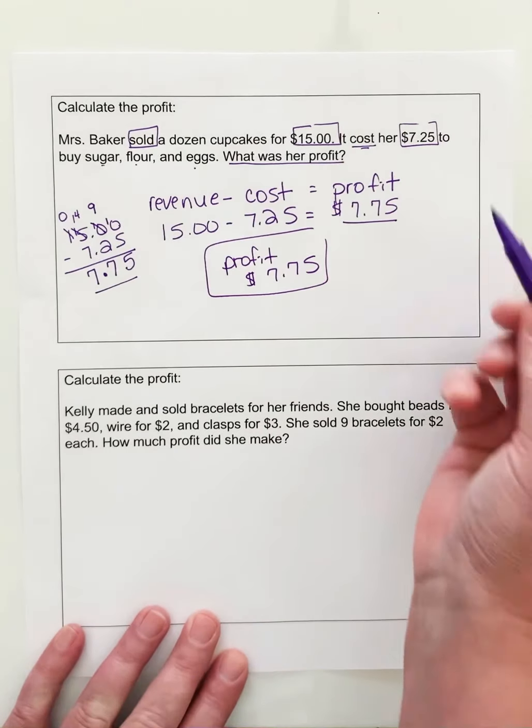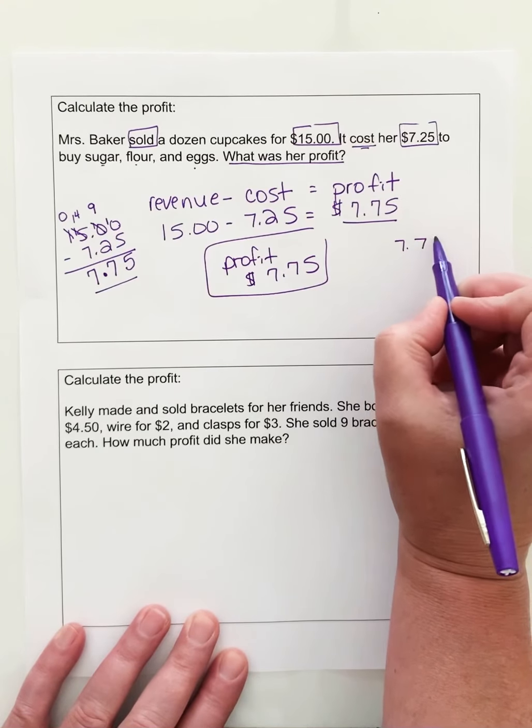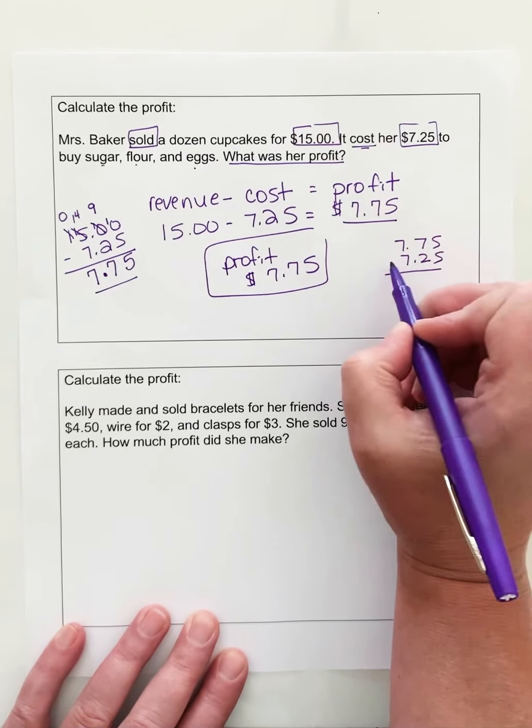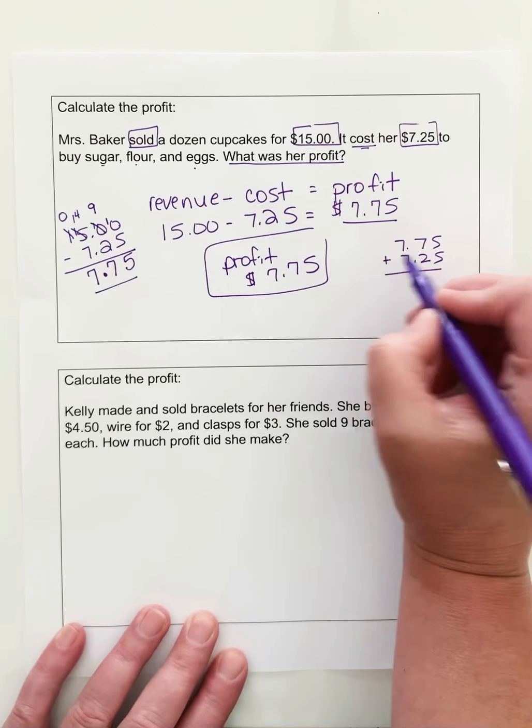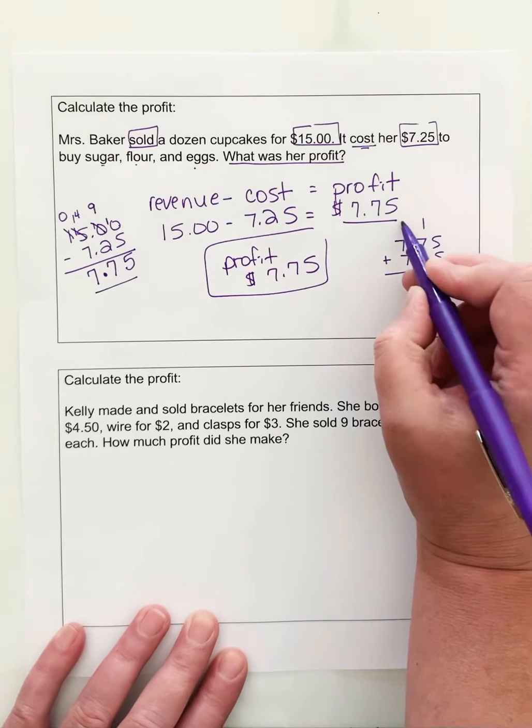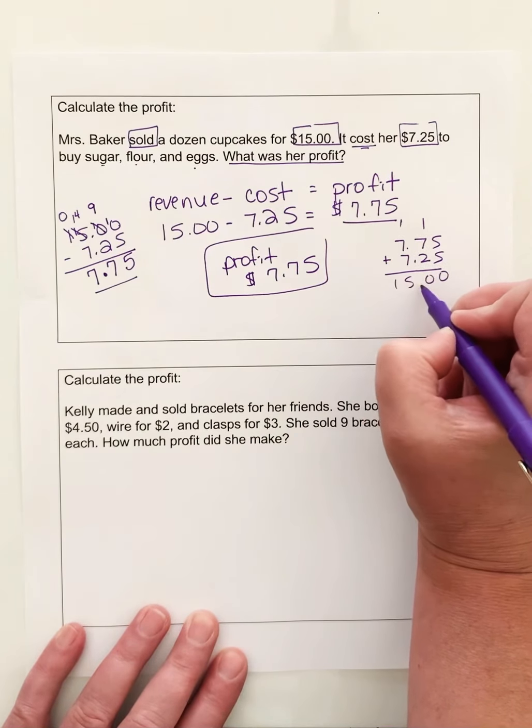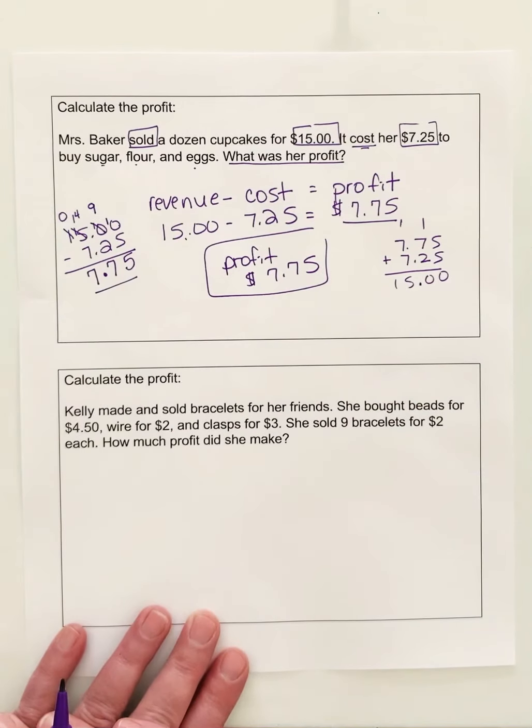If you want to check yourself, we can add our profit to our costs to check ourselves and make sure that we are correct. Let's see, 9, 10, 14, 15. Drop down that decimal. So you can see I came up with my revenue. That's correct.